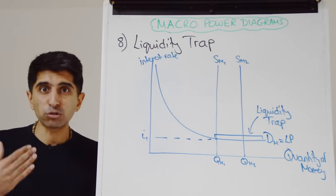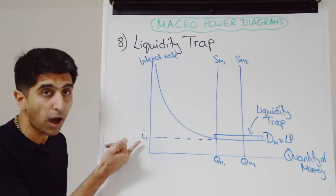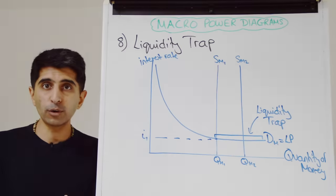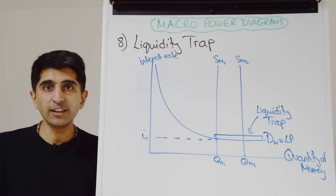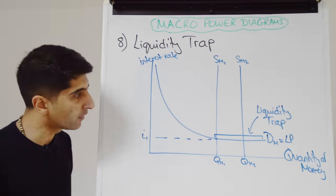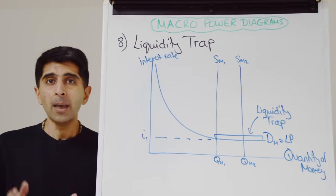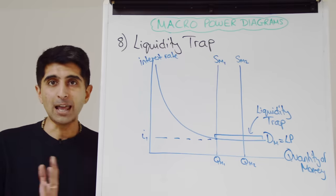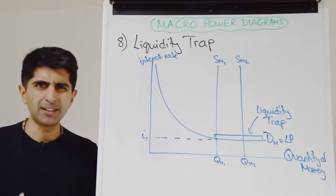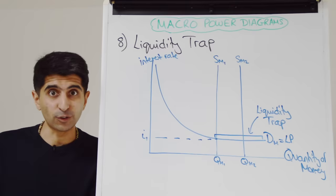If the central bank tries to reduce interest rates further by increasing the money supply, it won't have any effect — interest rates can't fall below the lower bound I1. Therefore, borrowing will not rise, aggregate demand will not rise, growth will not increase, unemployment will not fall, inflation will not rise — monetary policy loses effectiveness completely in a liquidity trap. This is very applicable at the moment, as interest rates are essentially at zero in many developed countries like the Eurozone, Japan, and the UK. It's a strong Keynesian argument: if monetary policy is spent, fiscal policy is the only option.